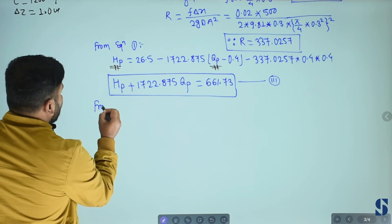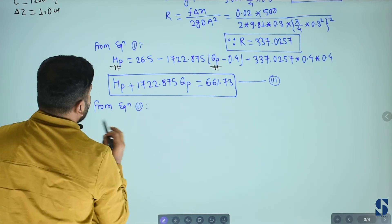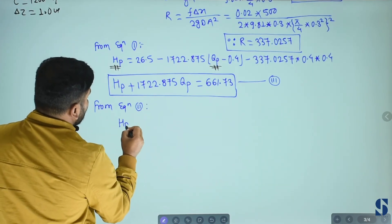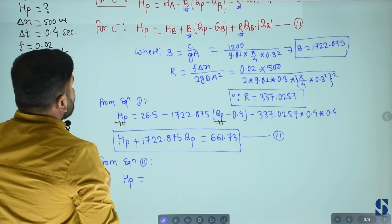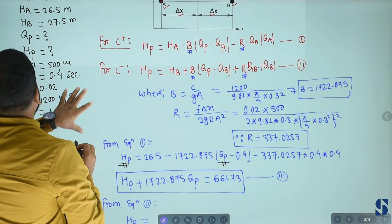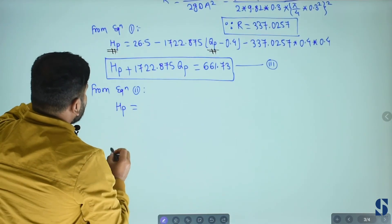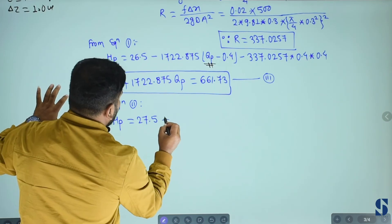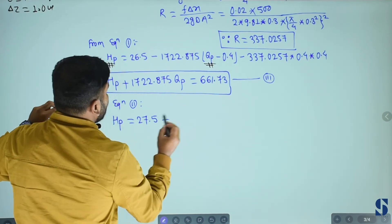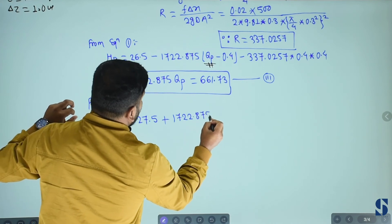From equation second, HP equals to HB. HB value is 27.5 given in question. Equation second, HB equals to 27.5 plus B, which is 1722.875.